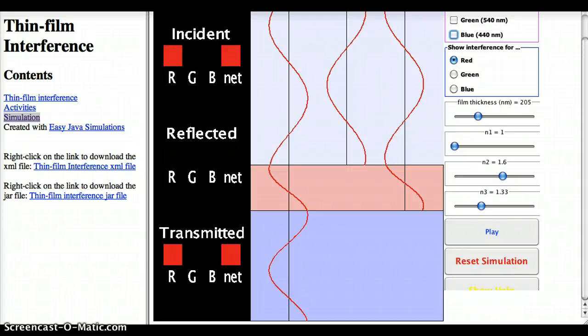Here is a simulation for thin film interference. So we have light blue, one material, one medium up here.